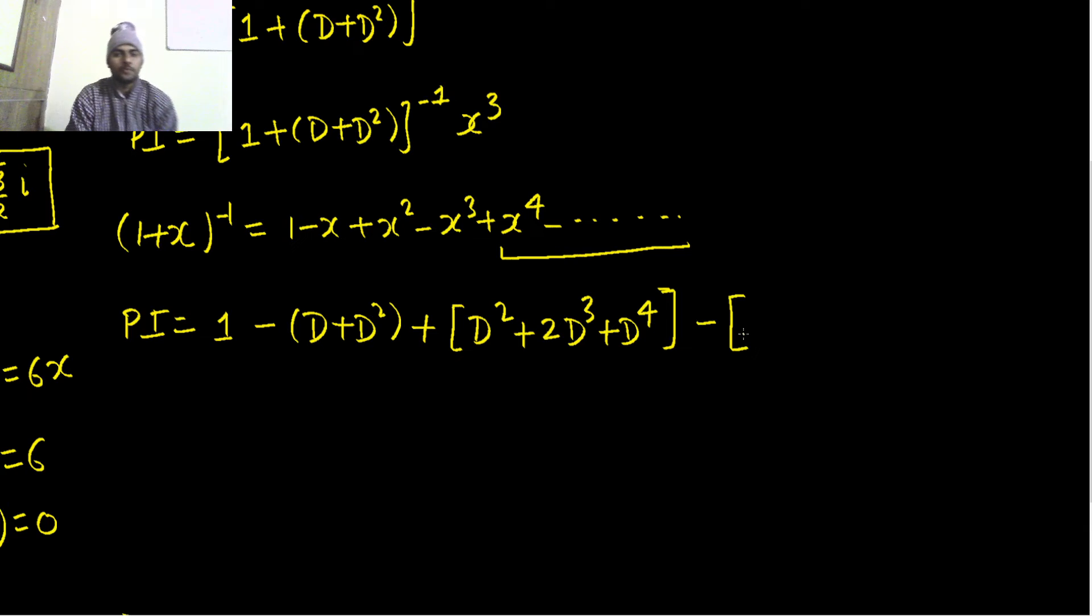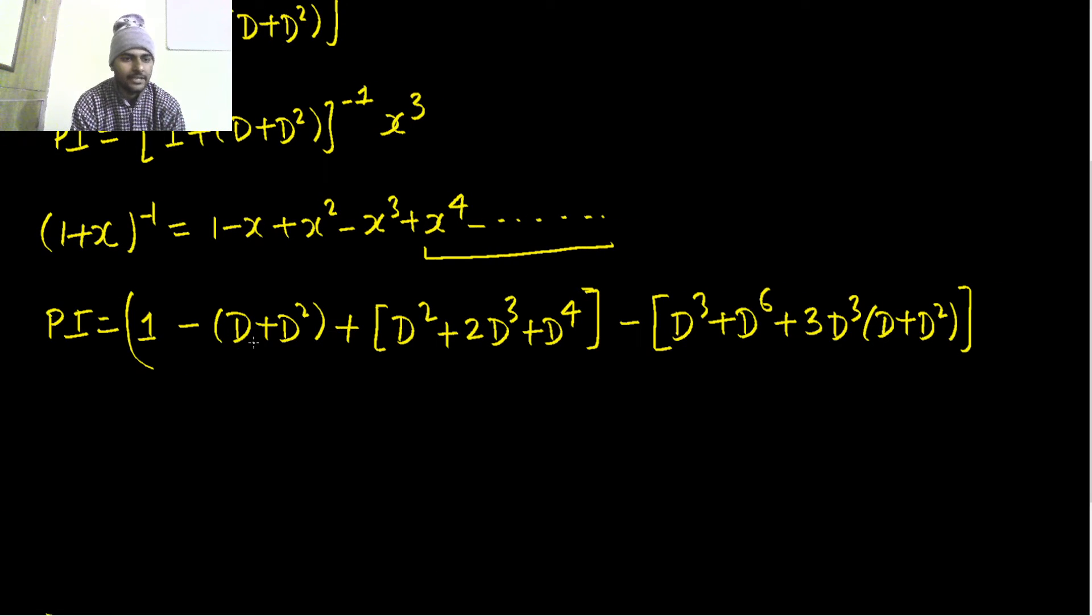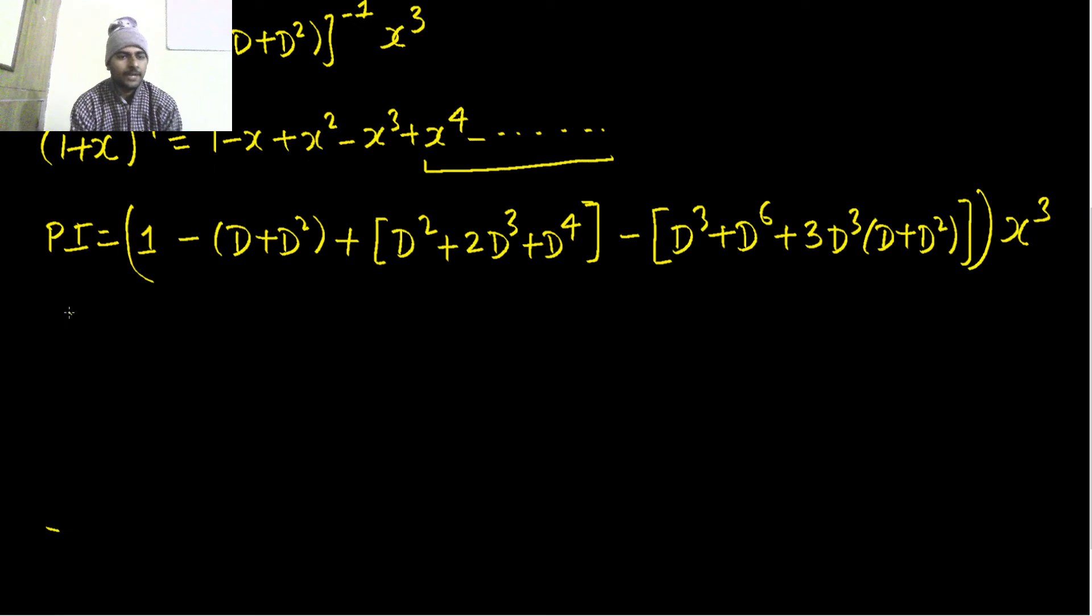So (D + D²)³ will be D³ + 3D² times (D + D²), which is D³ + 3D³ + 3D⁴ + D⁵.